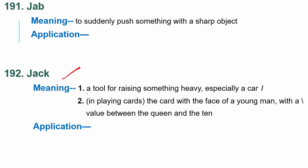Next word is jack. Jack has two meanings. First, it is a tool for raising something heavy, especially a car. Hum dekhte hai ki car jo hoti hai, humari wo jack se upar hoti hai — jisse hum car ko upar kar sakte hai usko bolte hai jack. I used the jack to lift the car up and take the wheel off — meinne jack ka istemal kiya car ko upar uthane mein aur phir pahiya nikal diya.